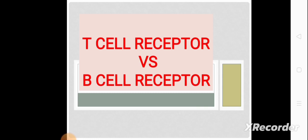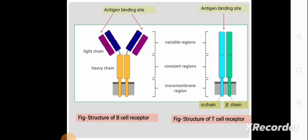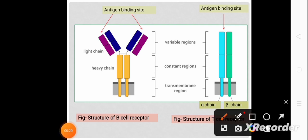Let's start. These are the structures of the B-cell receptor and T-cell receptor. From this diagram, it is seen that the B-cell receptor has two antigen binding sites — antigens are bound in these two regions — whereas the T-cell receptor has one antigen binding site.